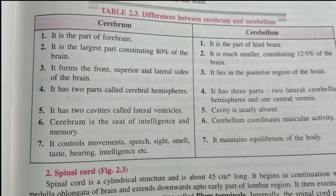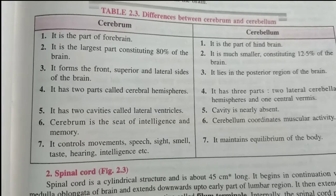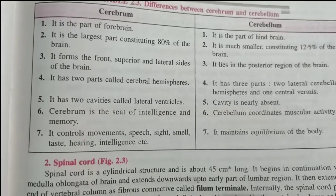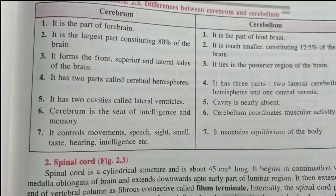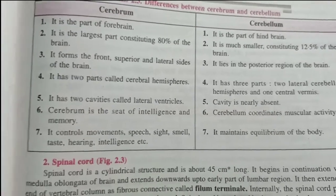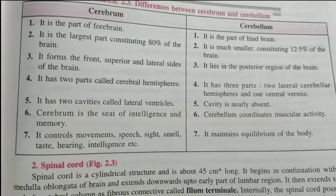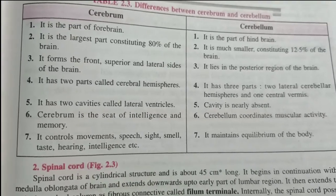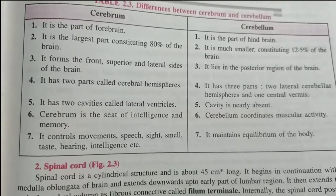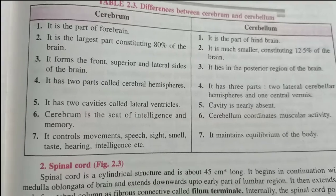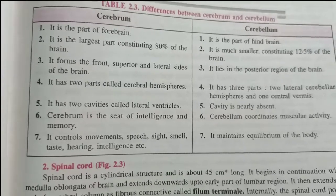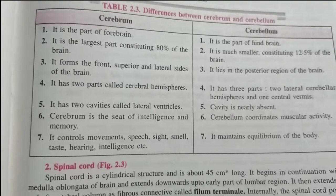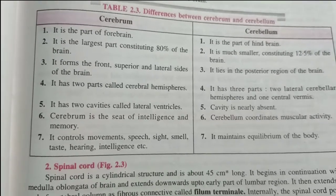Fourth point: Cerebrum has two parts called Cerebral Hemispheres. Cerebellum has three parts — two lateral Cerebral Hemispheres and one central hemisphere. Cerebrum has two cavities called lateral ventricles, while in Cerebellum the cavity is nearly absent.